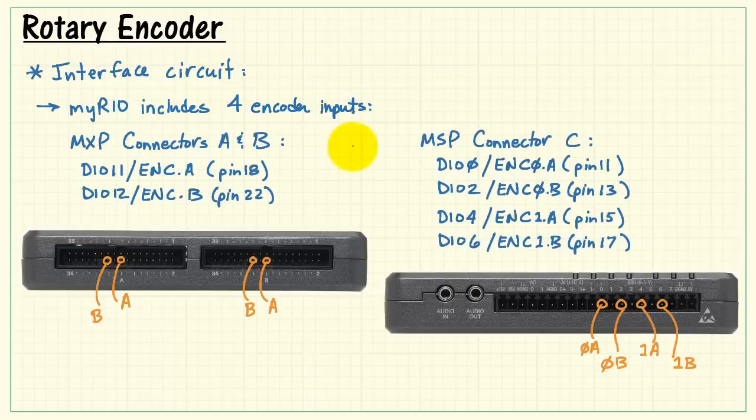Now let's find out how to interface the rotary encoder to MIRIO. MIRIO includes four encoder inputs total. On MXP connectors A and B, we have one encoder each, and these encoder inputs are shared with the DIOs, or digital input outputs.